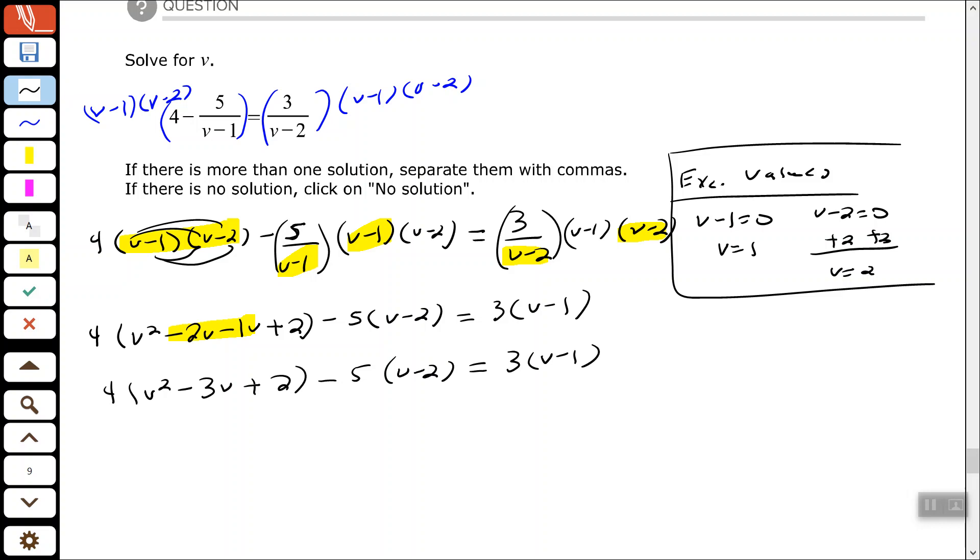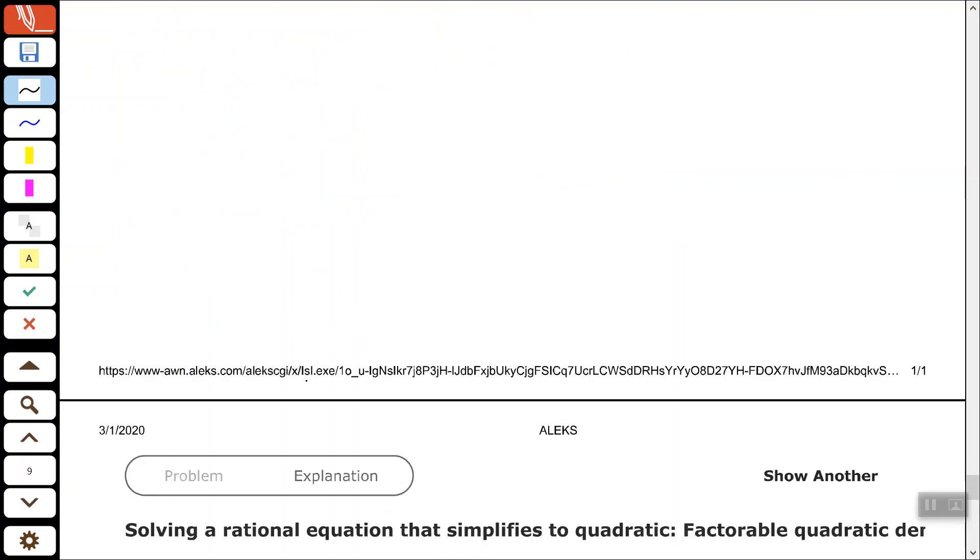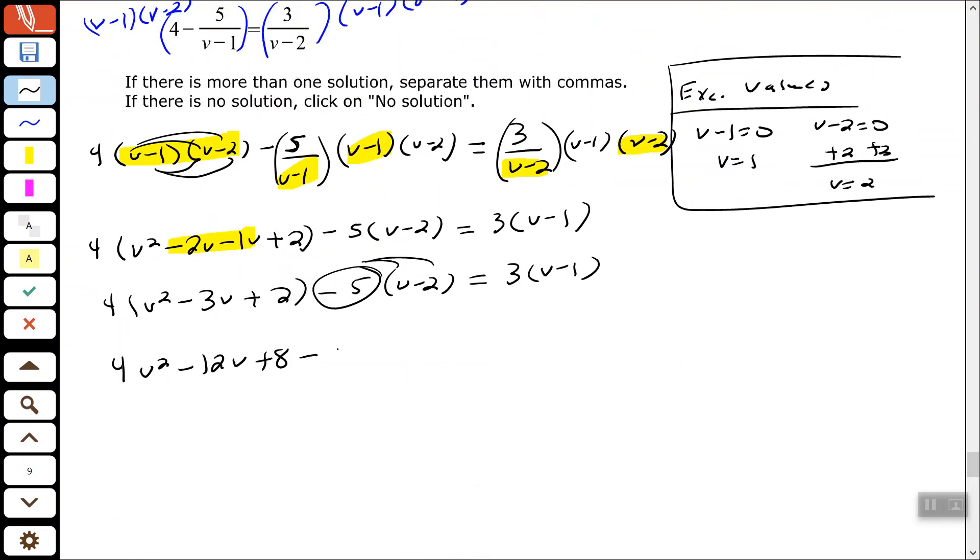Now we need to use our distributive property to clear the parentheses. So distribute the 4 to the trinomial there. Distribute the negative 5 after that. Distribute the 3.